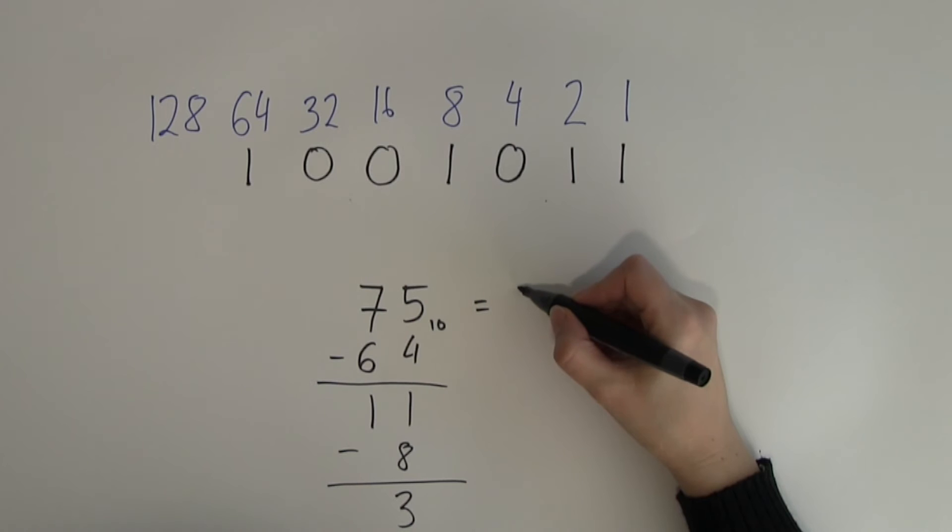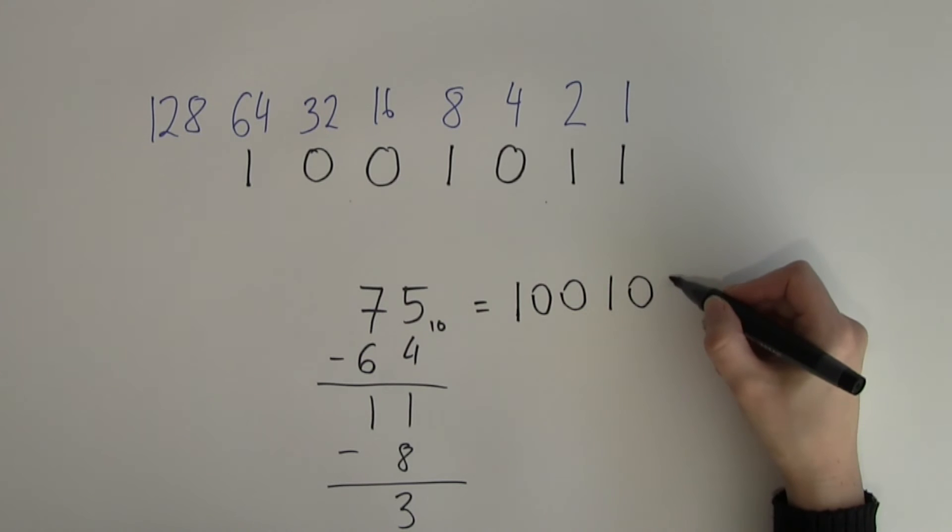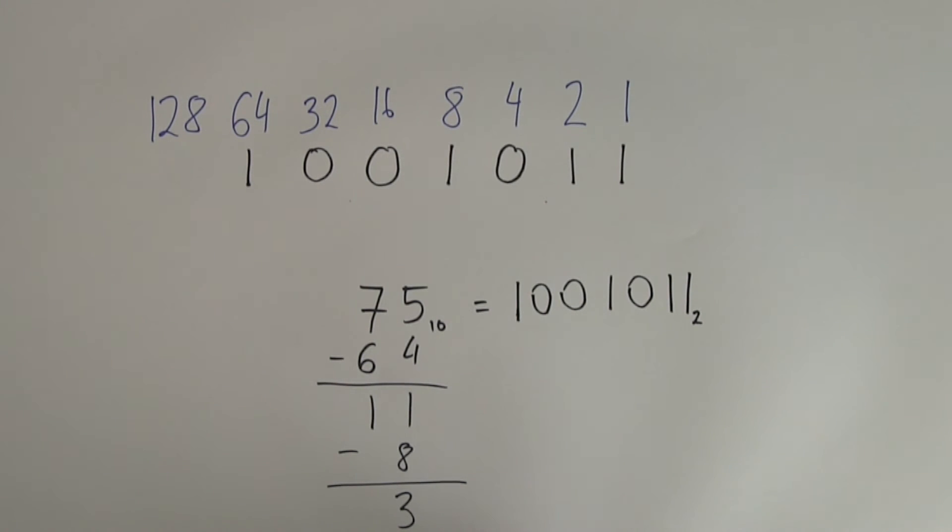So, the final binary answer is 1, 0, 0, 1, 0, 1, 1, and I'm indicating that this is a binary number here.